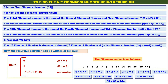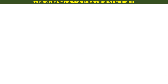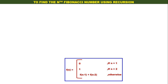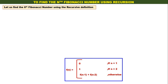The Fibonacci series is quite simple. We have the nth Fibonacci number: if n equals 1 it is 0, if n equals 2 it is 1, otherwise it is f of n minus 1 plus f of n minus 2. We already know this recurrence relation. Let us now find the nth Fibonacci number using the recursive definition.